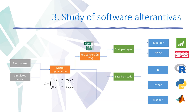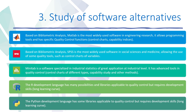Considering these criteria, five different solutions were analyzed. On the one hand, statistical packages like Minitab or SPSS; on the other hand, code-based solutions like R or Python, which are programming languages; and finally, a scientific suite like MATLAB. Based on bibliometric analysis, MATLAB was the most widely used software in engineering research.